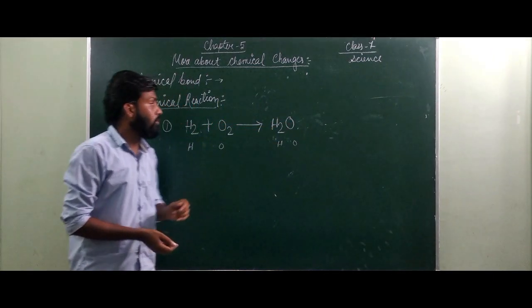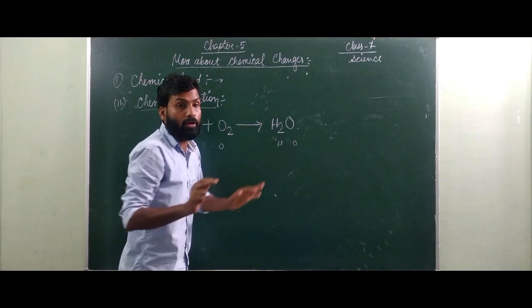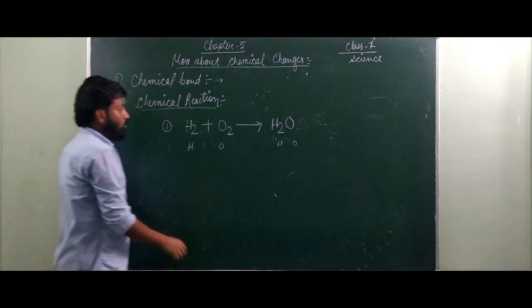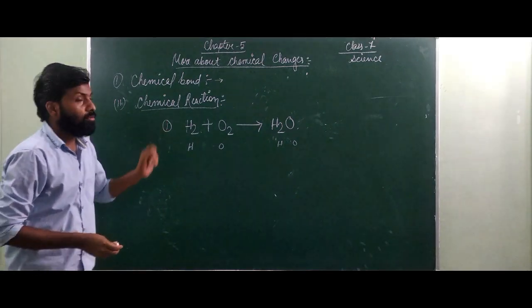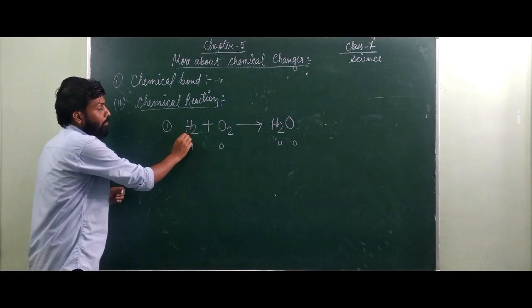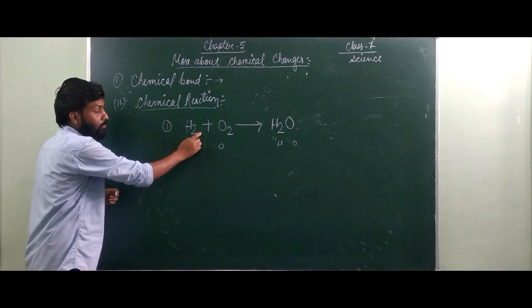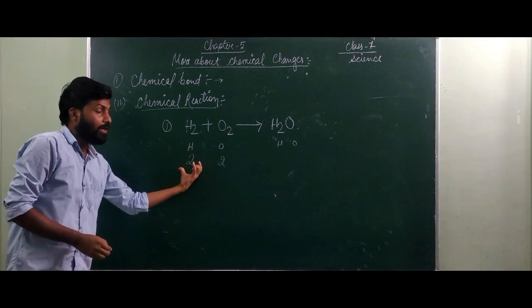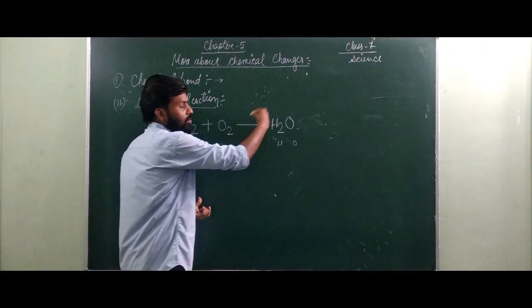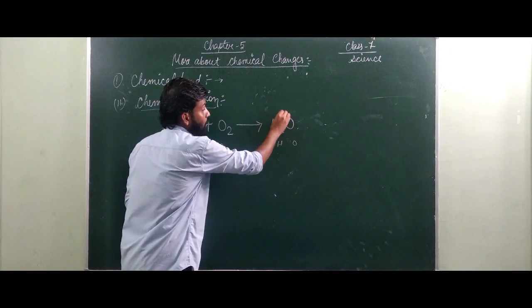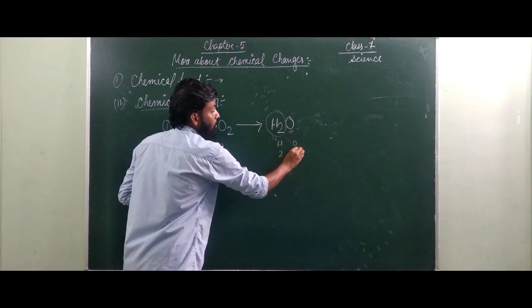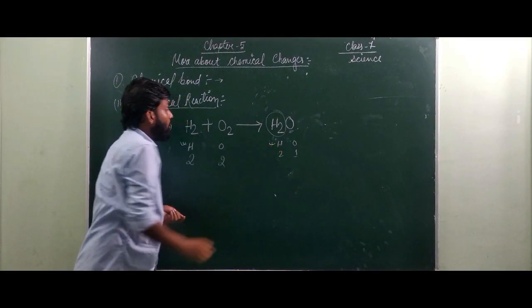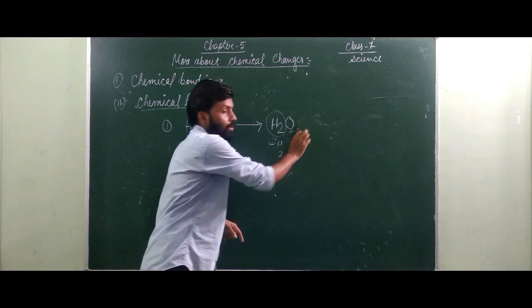Now we are concentrating on how to balance the reaction. First of all, see how many hydrogen atoms we have on the reactant side — we have two hydrogen and two oxygen. Now come to the product side H2O: how many hydrogen? Two. How many oxygen? Only one. So on the left side we have two hydrogen and two oxygen, but on the right side we have two hydrogen and only one oxygen. This is not balanced.